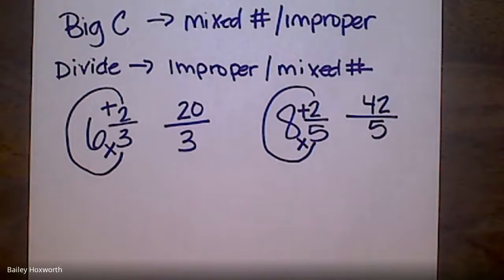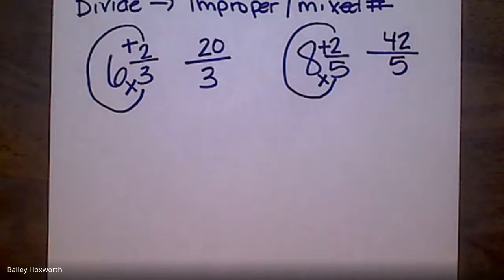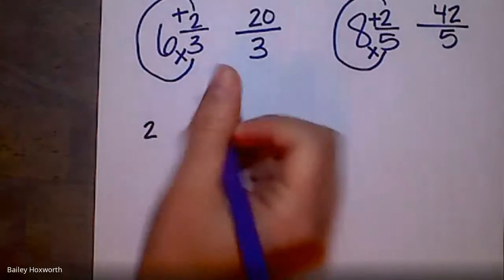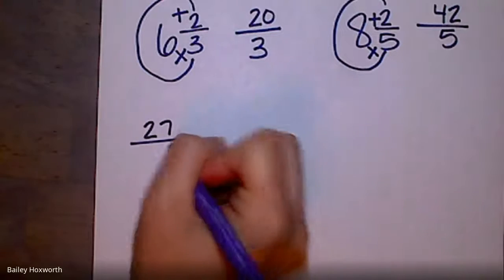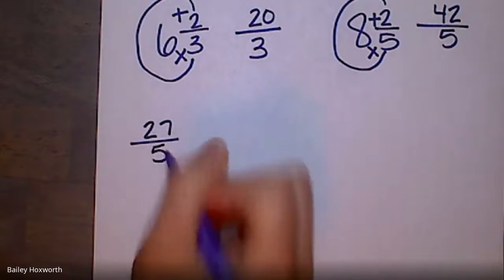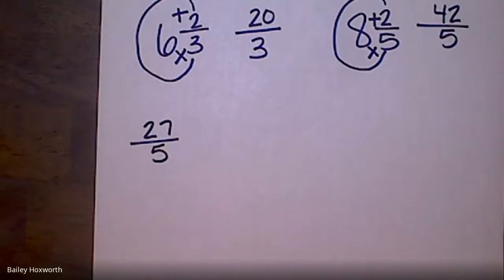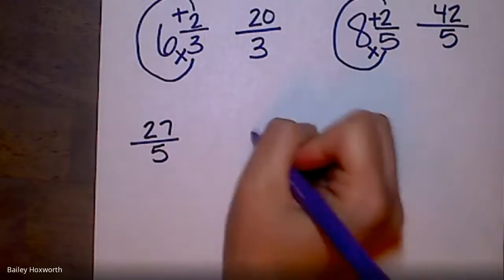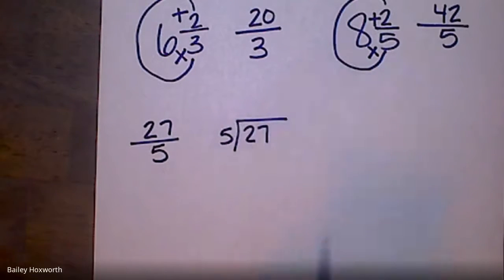Okay, let's talk about dividing. Let's say I have 27 divided by 5. I need to turn this into a mixed number. All I got to do is divide like normal. 27 inside the house, 5 outside the house.